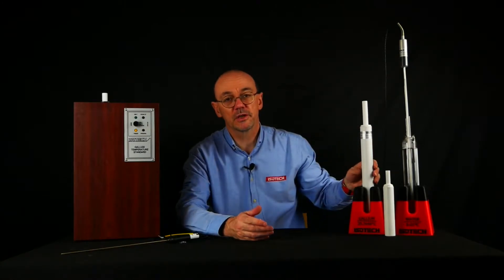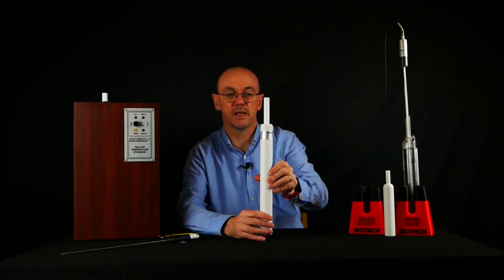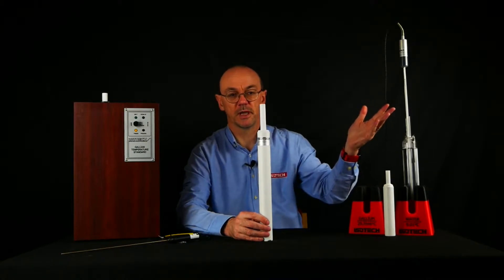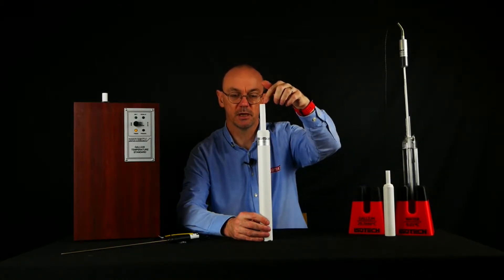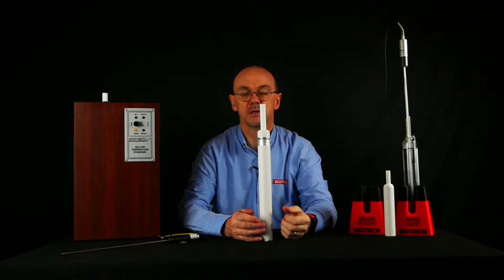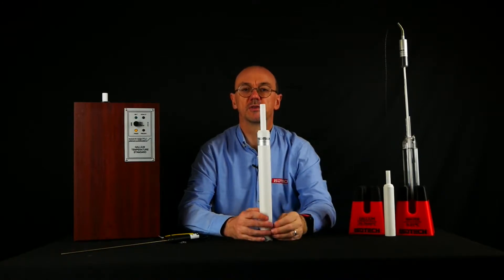So I have a practical gallium fixed point cell here. The SPRT or the thermometer being calibrated comes into the tube here. If the cell is sealed, the thermometer doesn't make direct contact with the metal.